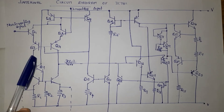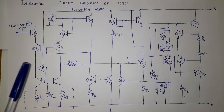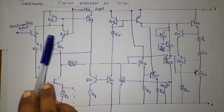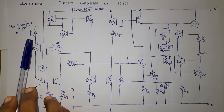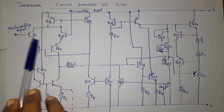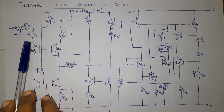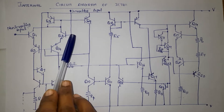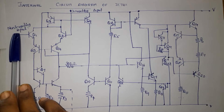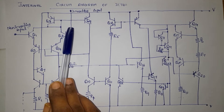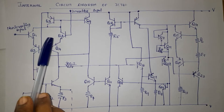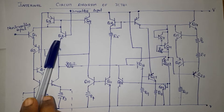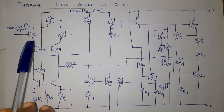First we go for the input stage. The input stage is the differential amplifier stage. Transistors Q1 and Q2 form the differential amplifier. Differential amplifier means we are giving two different inputs: one is non-inverting input (positive input) and another one is inverting input (negative input). So the input stage is a differential amplifier stage with differential input applied between transistors Q1 and Q2.